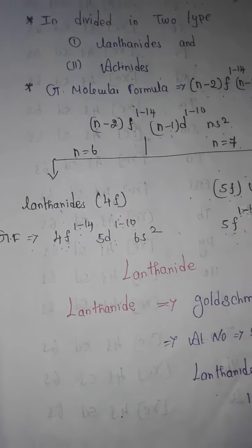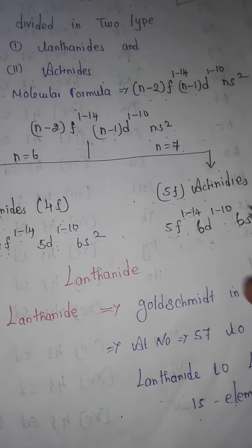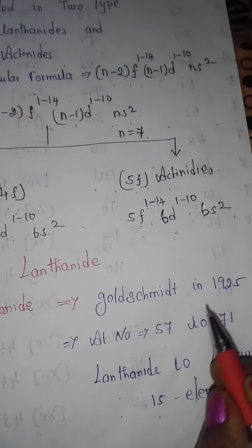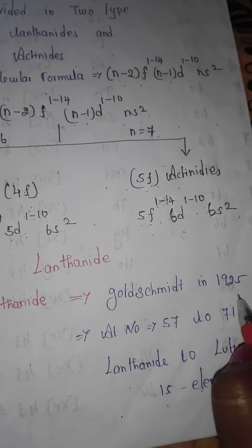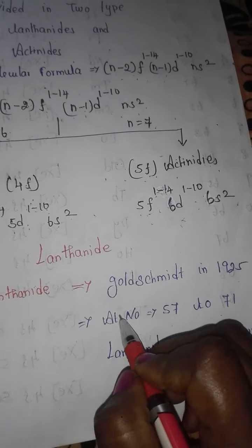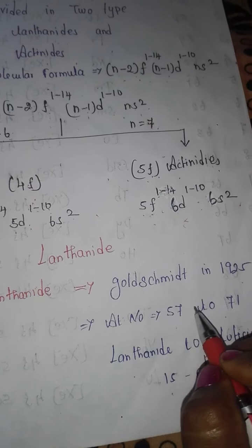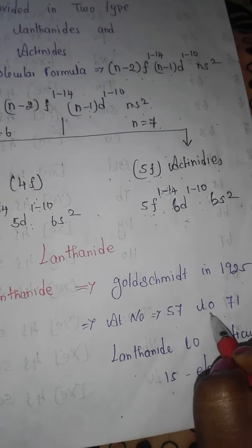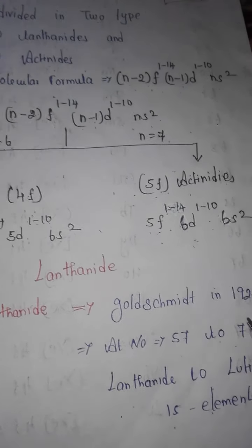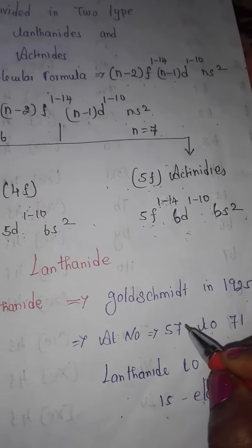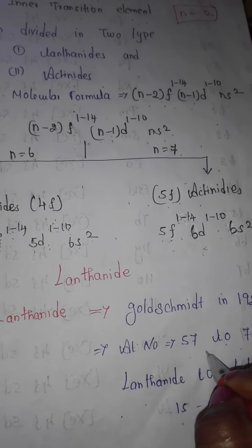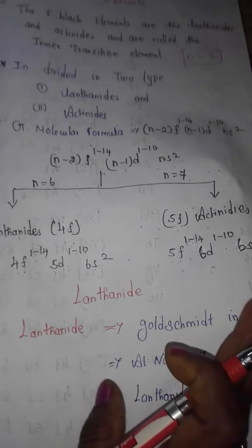Lanthanides were discovered by Goldschmidt in 1925. Atomic numbers 57 to 71 are lanthanides, from lanthanum to lutetium — 15 elements present in the lanthanide group.